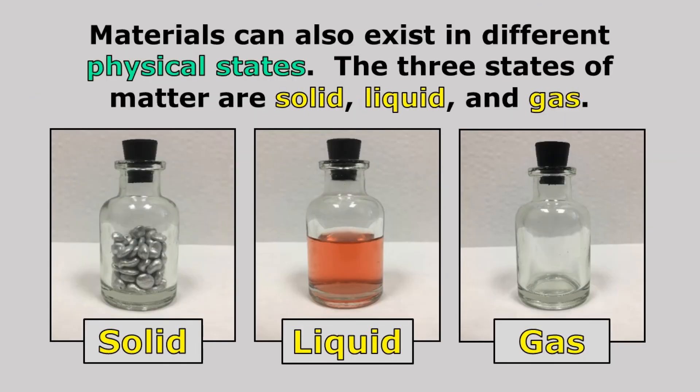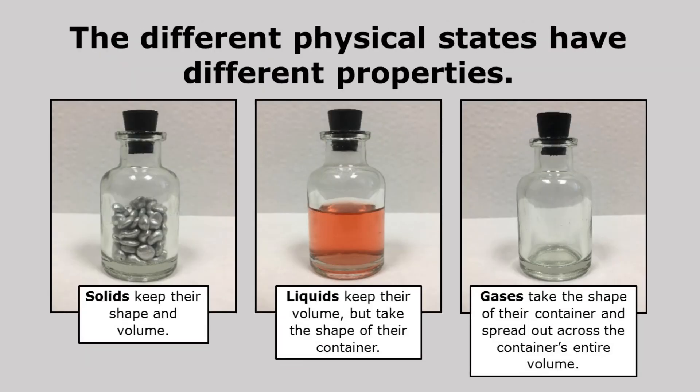Materials can also exist in different physical states. The three states of matter are solid, liquid, and gas. So if you're ever asked about the physical state of matter, you're being asked about whether it's a solid, a liquid, or a gas. The different physical states have different properties: solids keep their shape and volume; liquids keep their volume but take the shape of their container; and gases take the shape of their container and spread out across the entire volume of the container.